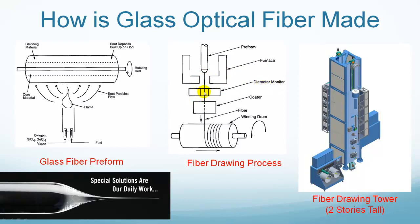A diameter monitor carefully monitors the fiber's diameter, which usually is 125 µm. Then the coater deposits a layer of plastic buffer coating for mechanical protection, which usually is 250 µm in diameter. And finally, the fiber is wound onto a spool for storage and transportation.